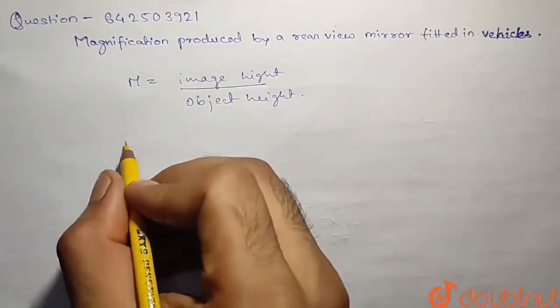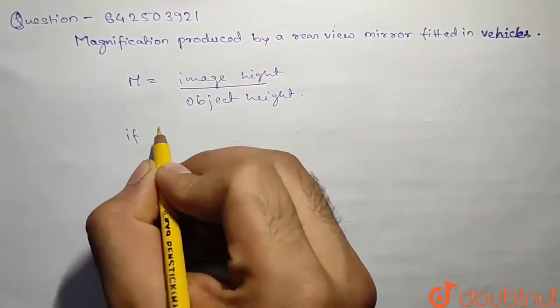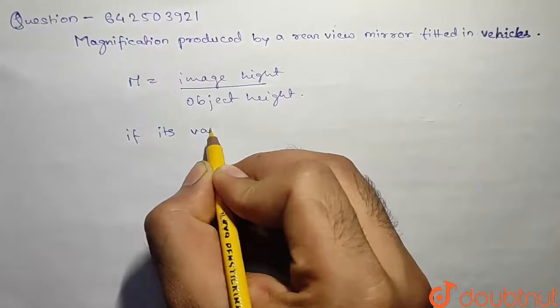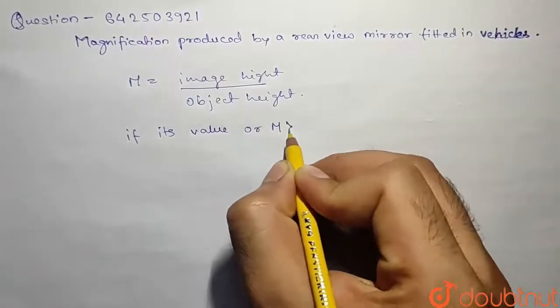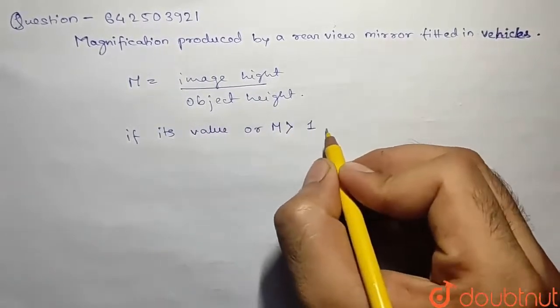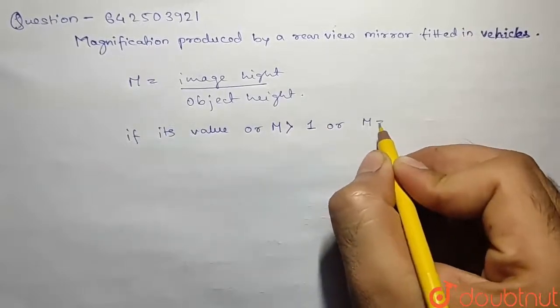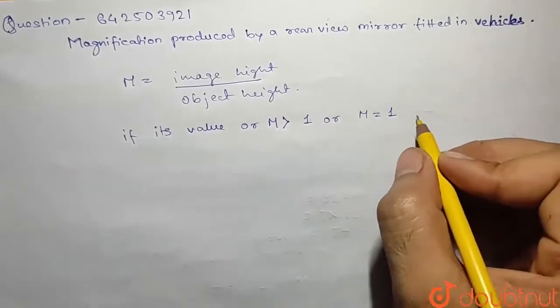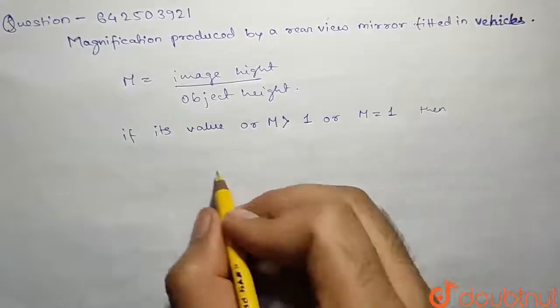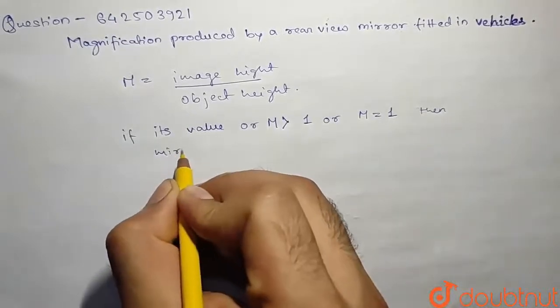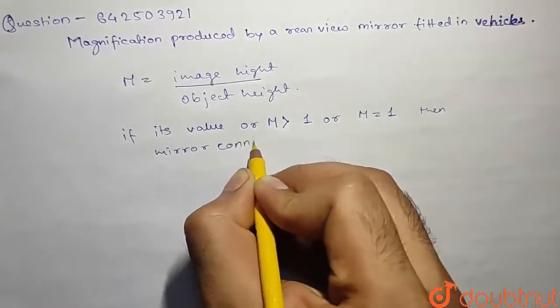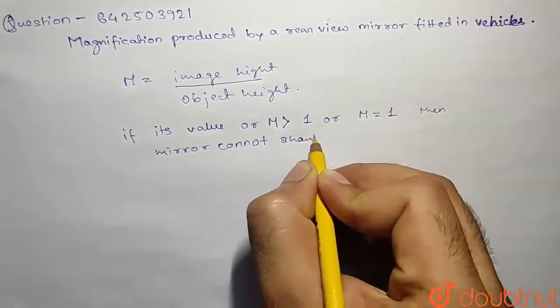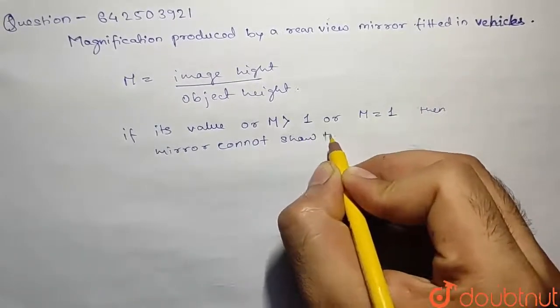So what we'll write here: if its value or m is greater than one or m is equal to one, then the mirror cannot show the full picture.